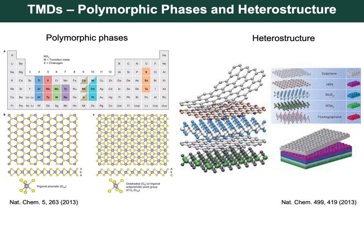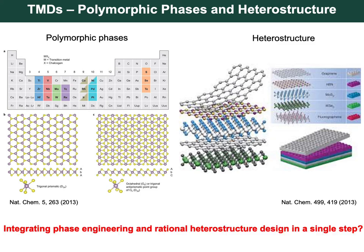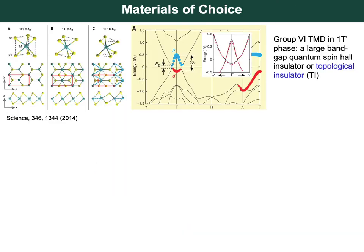In TMD research, phase engineering and integration of functionalities into heterostructures are of paramount interest. The electronic structures of TMDs are largely determined by the electron count of the transition metal and its coordination environment, so different polymorphic phases are expected to have different electronic structures. This research is motivated by the question of whether we can integrate phase engineering and rational heterostructure design in single-type systems.